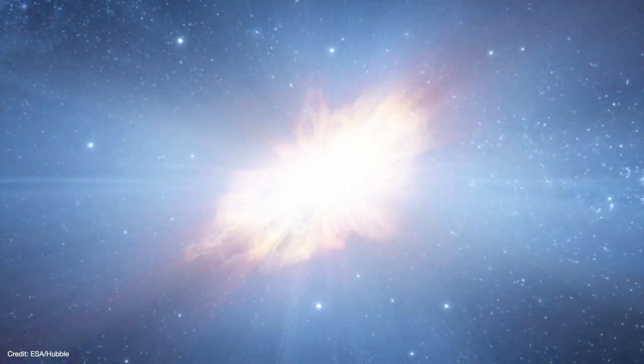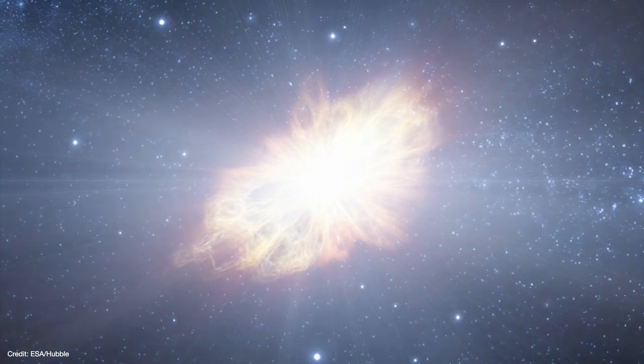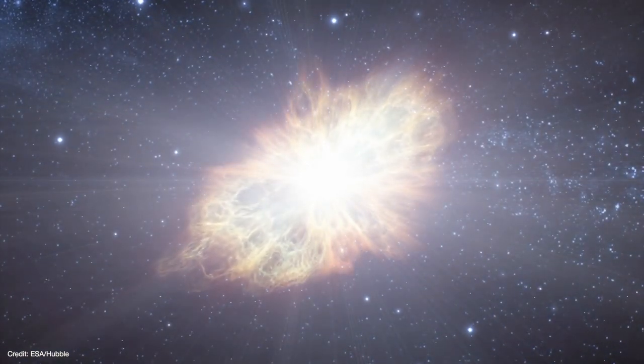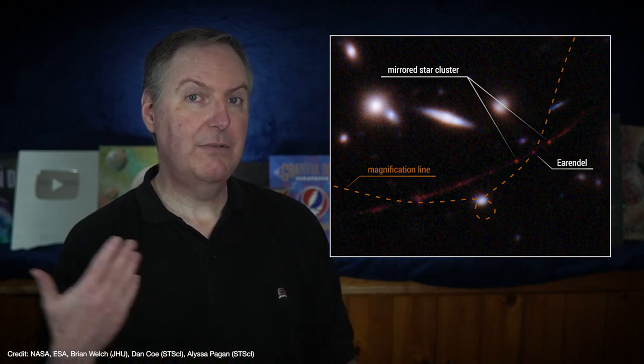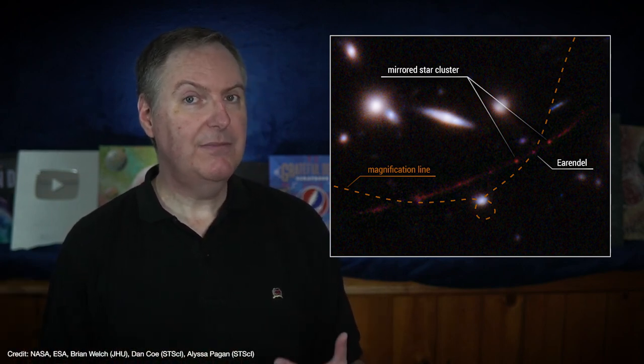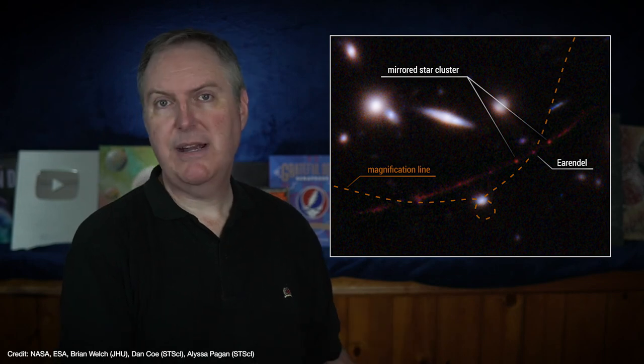We call those elements metals. Those metals would have been blasted into the surrounding interstellar medium and triggered the next generation of star formation. Now, given that Earendel didn't form until 500 million years later, it wouldn't be surprising if Webb finds metals in its spectrum.